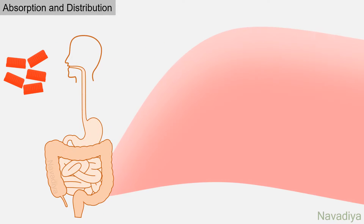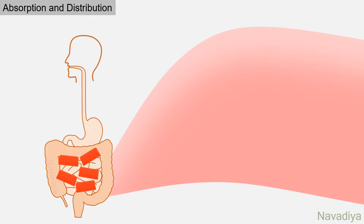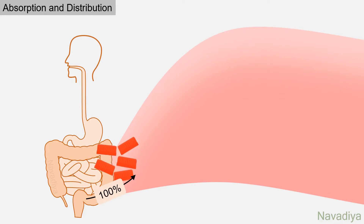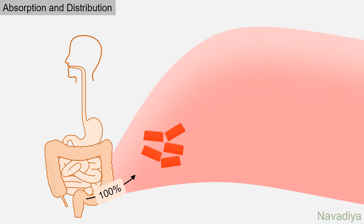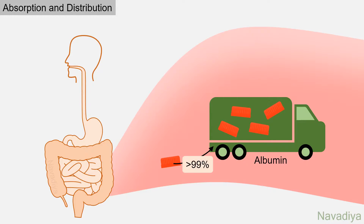Now let's talk about absorption and distribution. After oral administration, almost 100% of warfarin is absorbed. In circulation, more than 99% of warfarin binds with plasma proteins, mainly albumin. Because of this binding, warfarin has a very low volume of distribution.